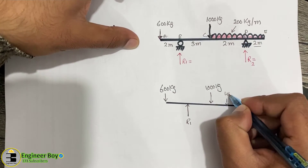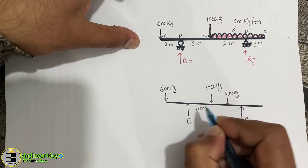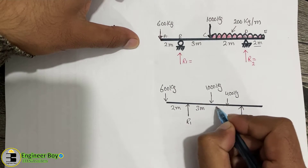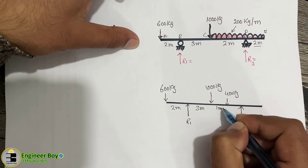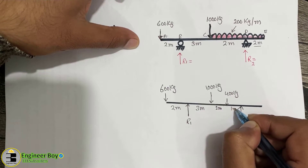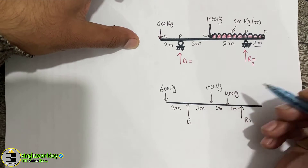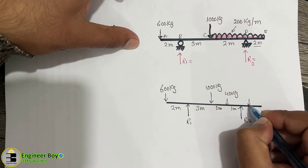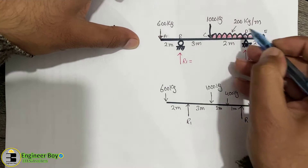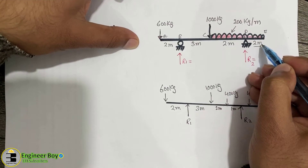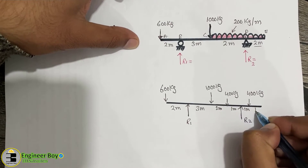The 400 kg point load acts at the midpoint of the 2-meter UDL span — that is 1 meter from each end. We do the same for the overhanging portion: another 400 kg point load at midpoint, with 1 meter on each side. So both UDL sections are now converted to point loads.